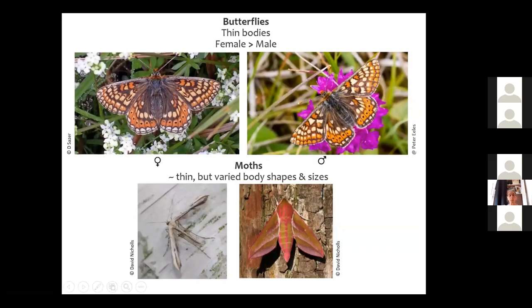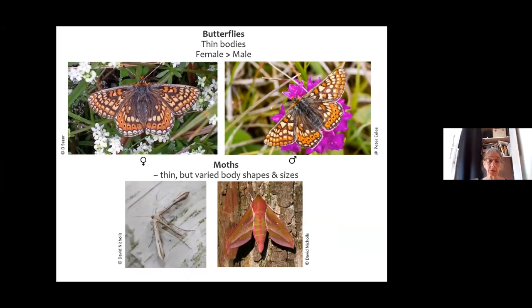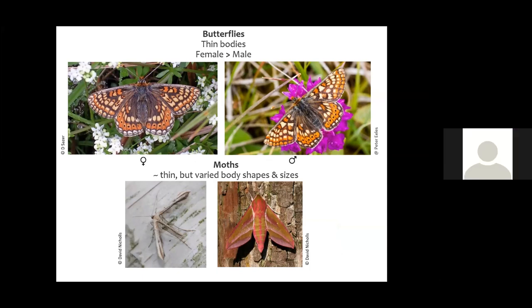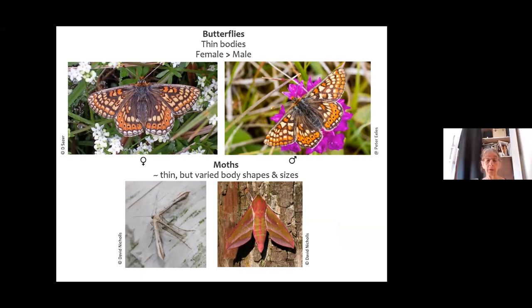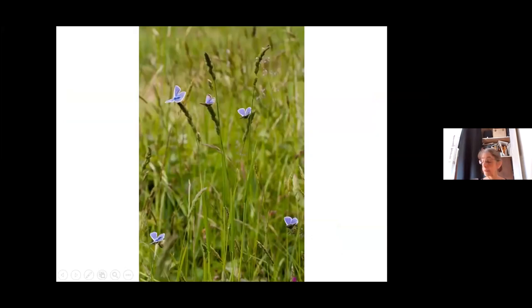Butterflies have relatively thin bodies, and the females — as you can see on the left on this marsh fritillary — have a wider abdomen than the males because she carries the eggs. Moths tend to have thinner bodies, but not always, as the elephant hawk-moth on the right shows with its very thick body. So there you go — no really clear difference.